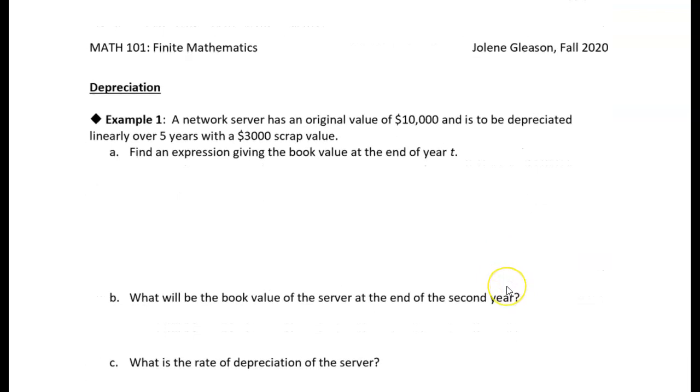Alright, so let's take a look at the first example. The first example is just a depreciation example. So here we have a network server. Its original value is $10,000. And it's to be depreciated linearly over five years to a scrap value of $3,000. So the first thing we're asked to do is find an expression for the book value at the end of year T.